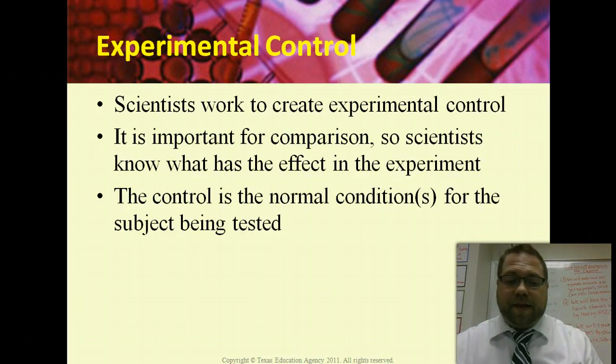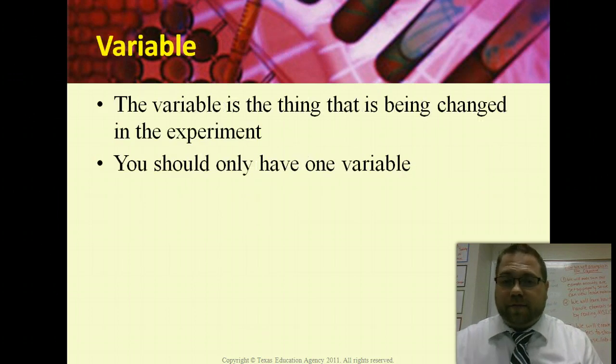Experimental control. This is basically trying to keep an experiment safe from outside influences. So with experimental control, you try to only change one thing, which would be the variable. If you're in a lab, you want consistent conditions with every single thing you're testing.